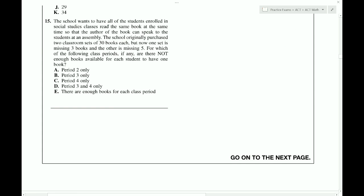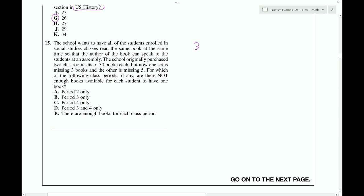The school wants to have all the students enrolled in social studies classes read the same books at the same time so that the author of the book can speak to the students at an assembly. The school originally purchased two sets of 30 books each, but now one set is missing three books and the other set is missing five books. For which of the following class periods, if any, are there not enough books available for each student to have one book? Originally, they had two sets, each with 30. One of them is missing three books and one of them is missing five books. So, right now, this has 27 and this has 25.